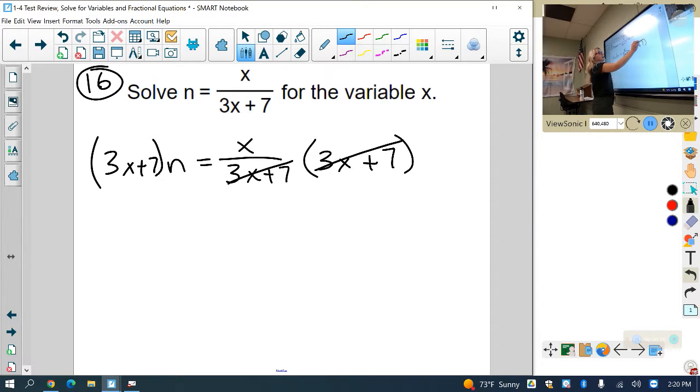And then this side cancels out here, and here I'm going to go ahead and distribute because I have an x here and an x here. So I have 3x, or nx, plus 7n equals x.